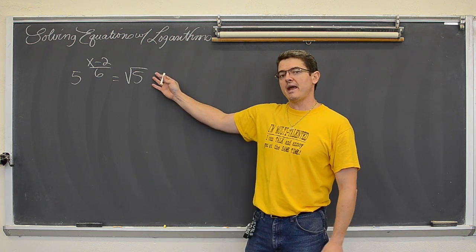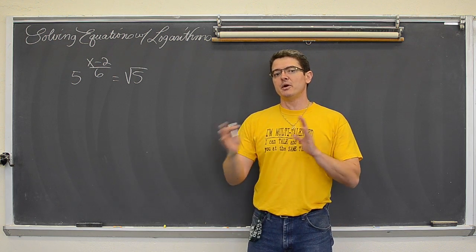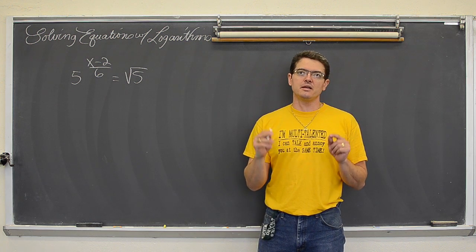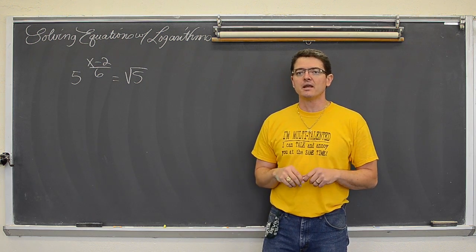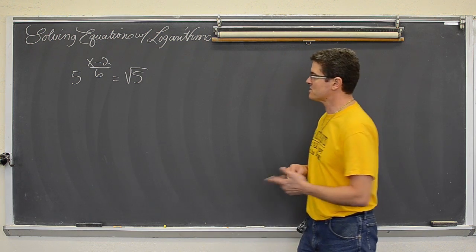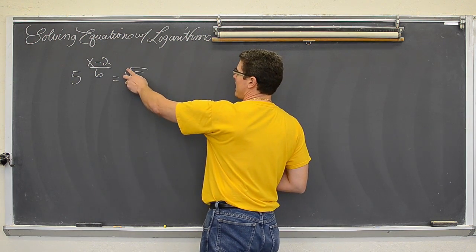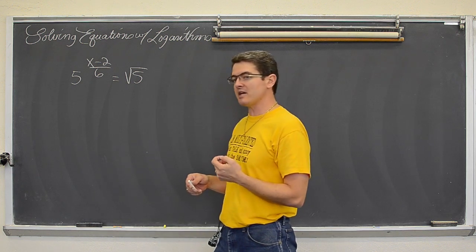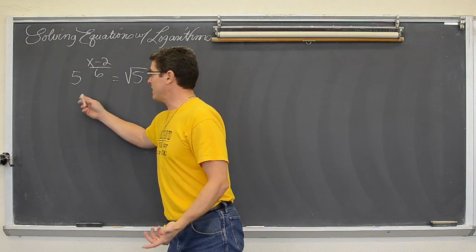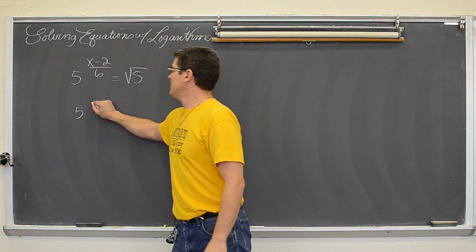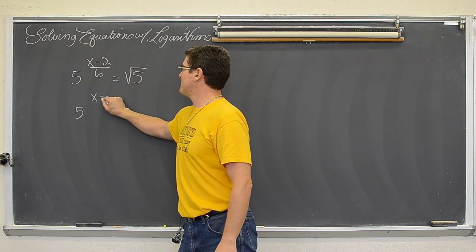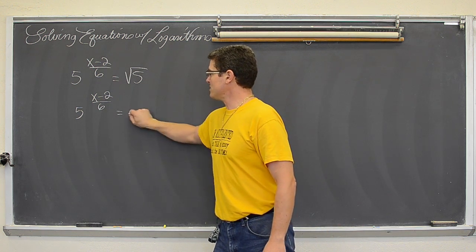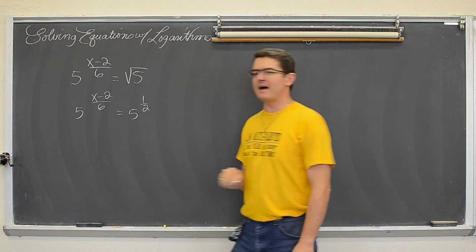However, sometimes you can get an equation where if you can get both bases to match on the left and right hand side, then you can just set the exponents equal to each other and will not need logarithms. So in this particular example, a square root power can be rewritten in a fractional exponent form as one half. So this is going to be 5 to the (x-2) over 6 power, quite a complicated exponent there, equals 5 to the one half power.